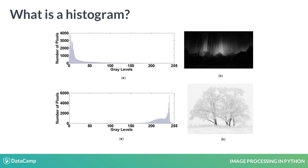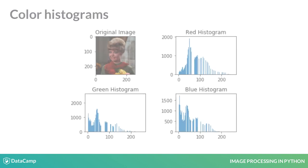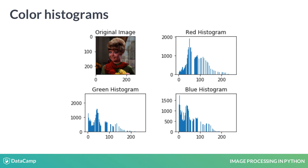The histogram of an image is a graphical representation of the amount of pixels at each intensity value, from 0 being pure black to 255 being pure white. The first image is really dark, so most of the pixels have a low intensity from 0 to 50, while the second one is lighter and has most of the pixels close to 200 and 255. We can also create histograms from RGB three-channel color images. In this case, each channel — red, green, and blue — will have a corresponding histogram.